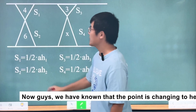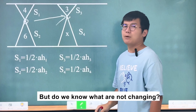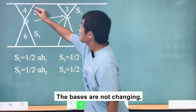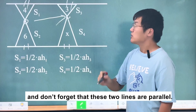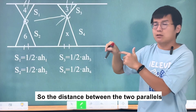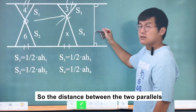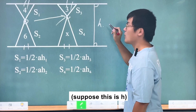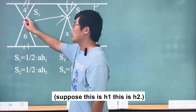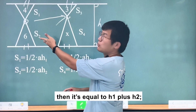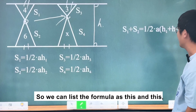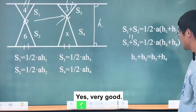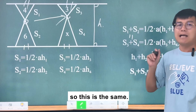We know that the point is changing position, but what is not changing? The bases are not changing, and since the two lines are parallel, the distance between them is certain. Suppose the total distance is h, and the sub-heights are h1 and h2. Then h equals h1 plus h2, and also h3 plus h4. So we can list the two formulas and see that since the bases are the same and h1+h2 equals h3+h4, the sums of the areas are equal.